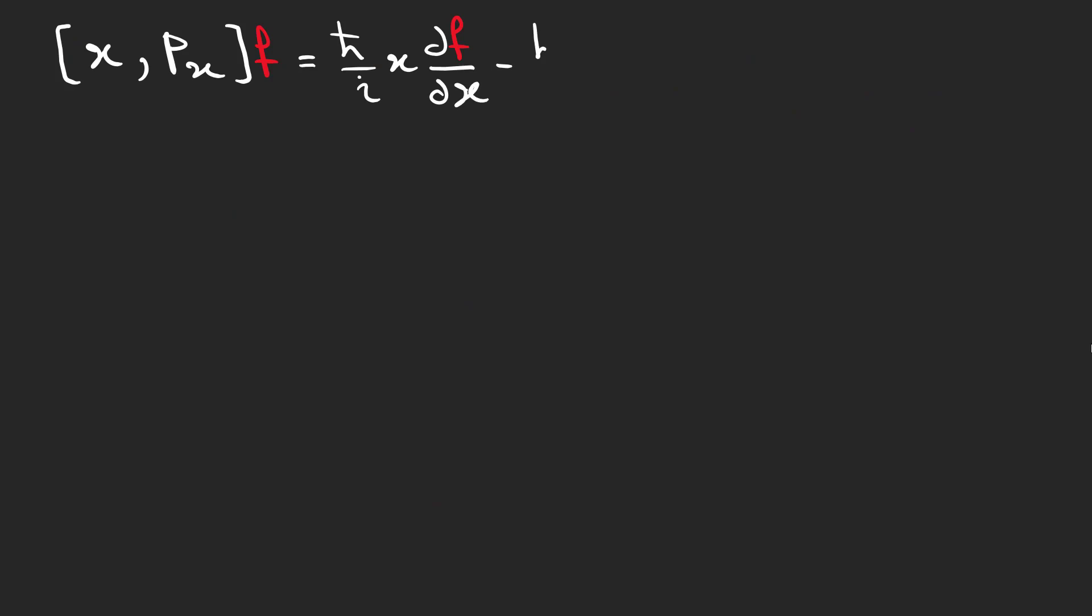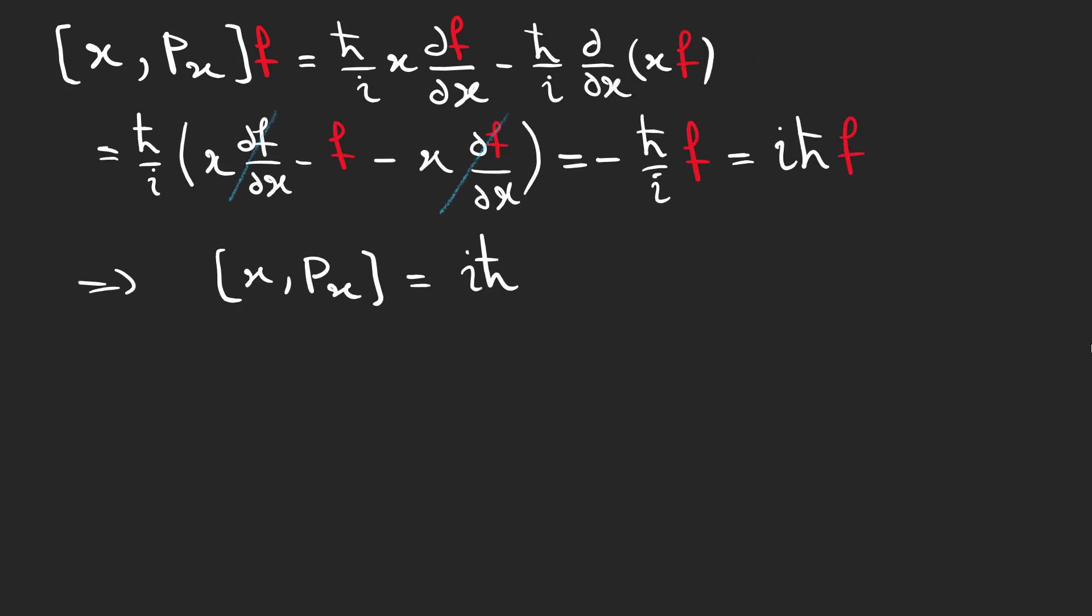But what about the commutation relation for x and px? As you can see, it is not commutable and equal to iℏ. So we should pay attention to the order of using these two operators.